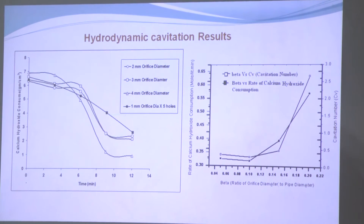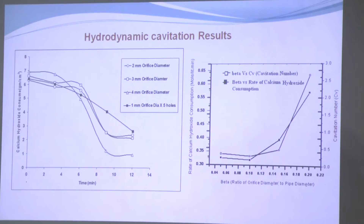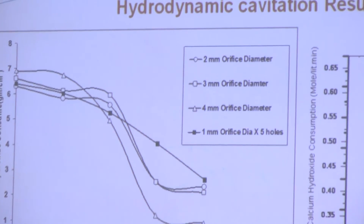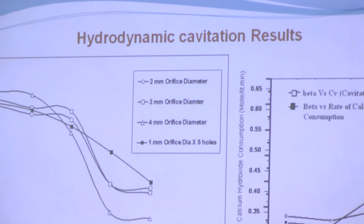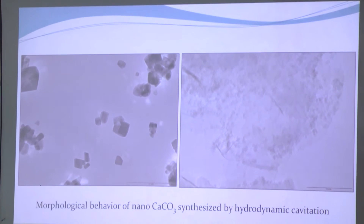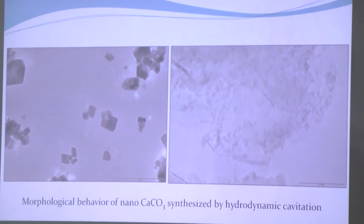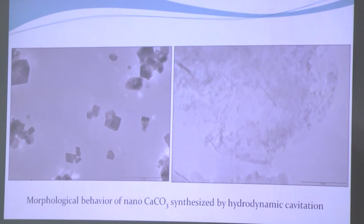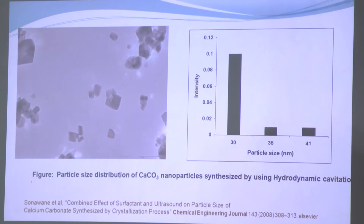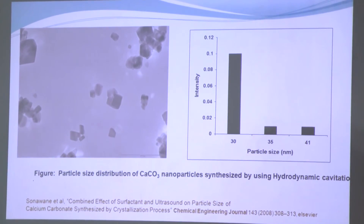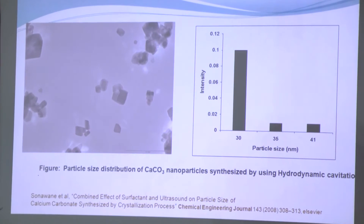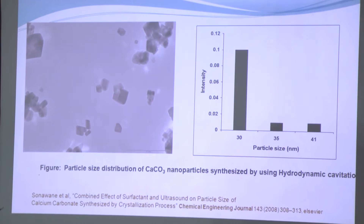With the different orifices, there is no distinct nucleation and metastable zone — you directly get formation of calcium carbonate within 12 minutes. Shape-wise, these are cube shapes of calcium carbonate, less than 50 nanometer size. Around 30 to 41 nanometer size distribution is obtained. The cubic shape is desirable and the distribution is very important.